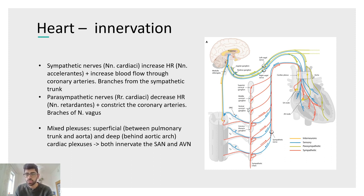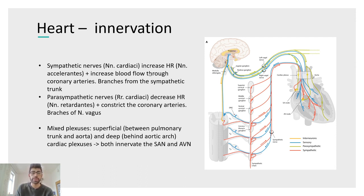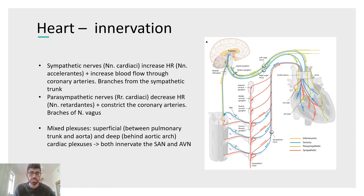The opposite effect is achieved by parasympathetic innervation. Whilst sympathetic nerves originate in the spinal cord's thoracic region, parasympathetic innervation comes from a different source — this will be covered when the autonomic nervous system is studied in more detail. Understanding this now will be helpful when you return to it in a few weeks.